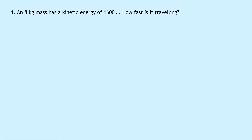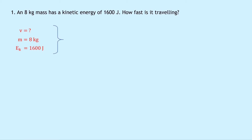Question one says that an eight kilogram mass has a kinetic energy of 1,600 joules. How fast is it travelling? Well, writing down what we know from the question first, we're trying to find the speed. We know that the mass is 8 kilograms and the kinetic energy is 1,600 joules. Writing down our equation for kinetic energy, we have Ek equals a half mv squared.